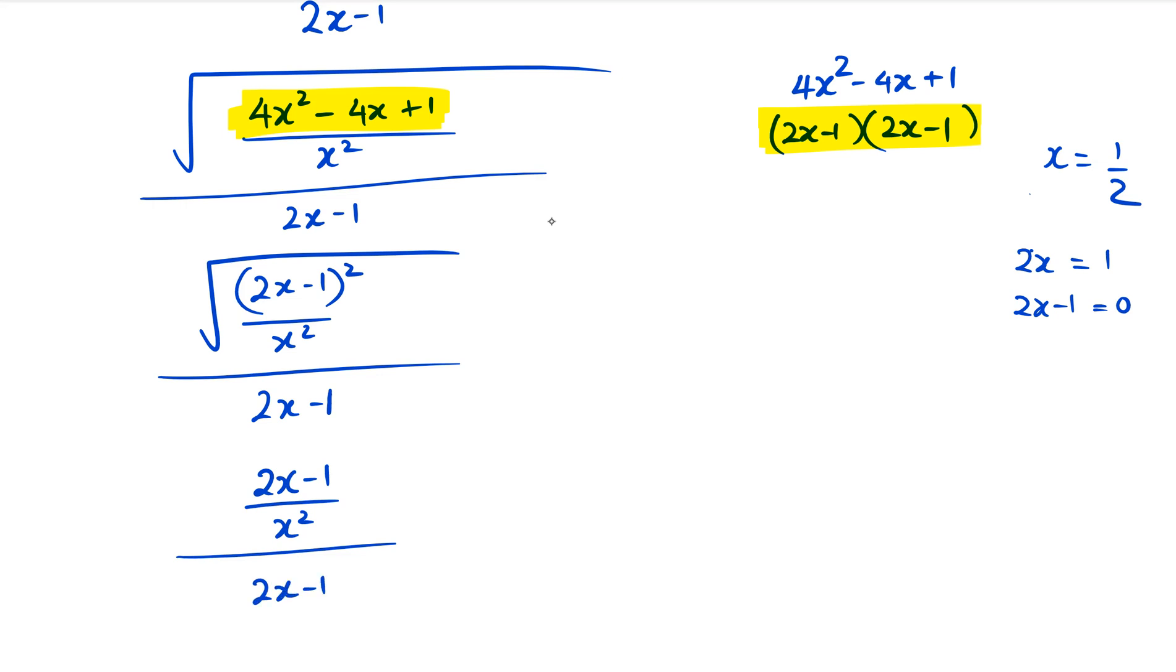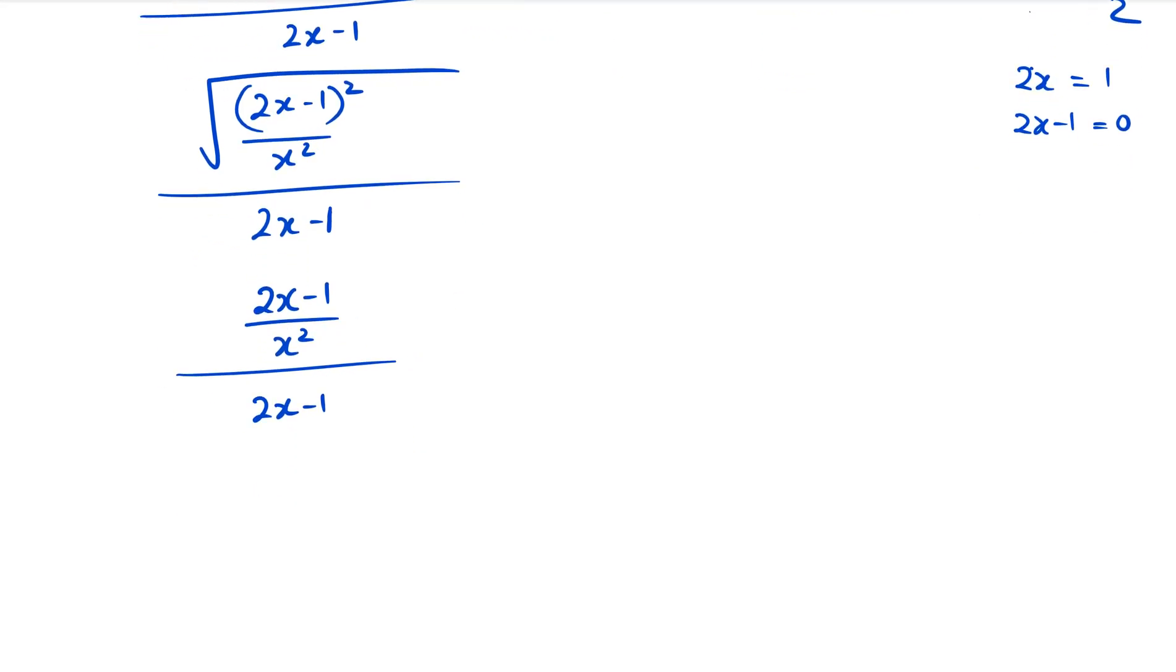That whole thing is divided by 2x - 1. At this point we can rewrite this as a fraction: (2x - 1)/x. Sorry, that should have been x, not x². The square root of x² is x.